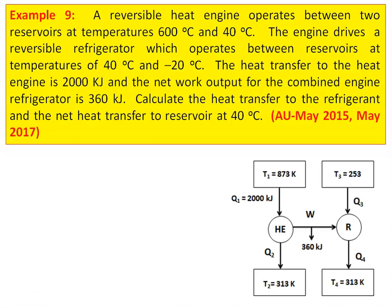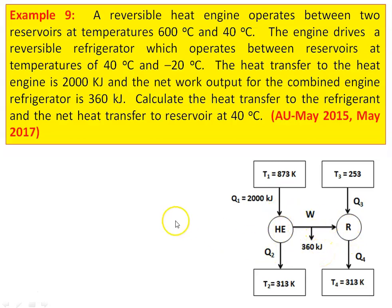We take example number 9 from the Anna University question paper, May 2015 and May 2017. A reversible heat engine operates between two reservoirs at temperatures 600°C (873 Kelvin) and 40°C (313 Kelvin). The engine drives a reversible refrigerator which operates between reservoirs at 40°C and minus 20°C (253 Kelvin). The heat transfer to the heat engine is 2000 kilojoules. The net work output from the combined engine-refrigerator is 360 kilojoules. Calculate the heat transfer to the refrigerant and net heat transfer to the reservoir at 40°C.